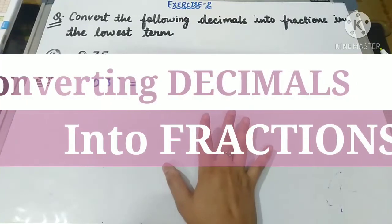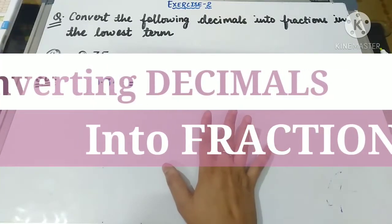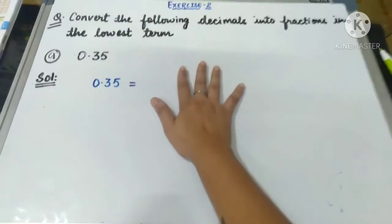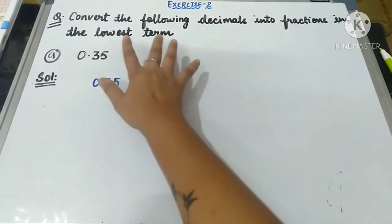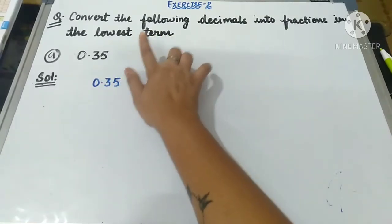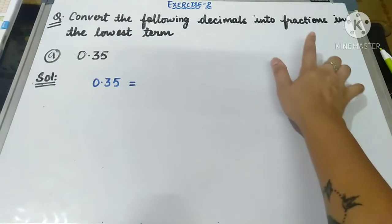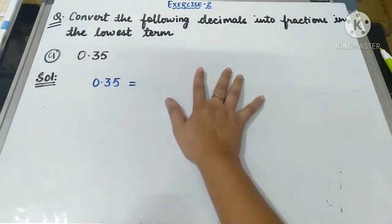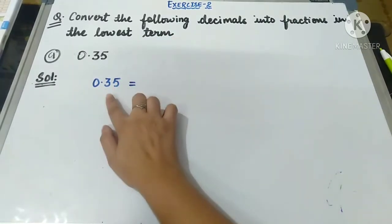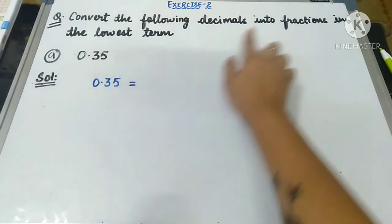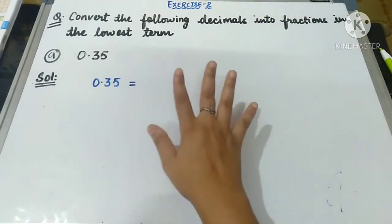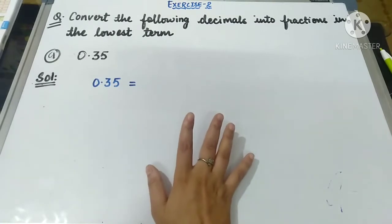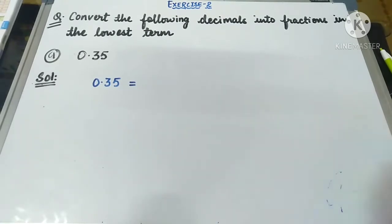Let us see converting a decimal number into a fraction. Today we are going to do this by equation. The question is: convert the following decimal into fractions in the lowest term. We have to first convert the given decimal into a fraction, and then reduce that fraction to the lowest term if possible.